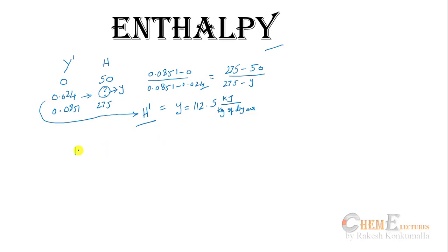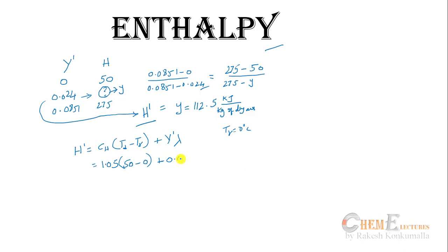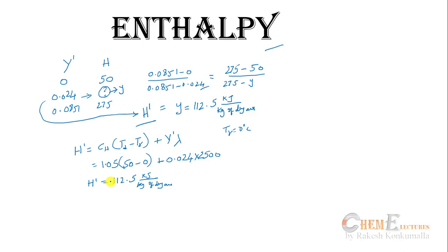Analytically, enthalpy H = C_s × (T_d − T_ref) + Y' × λ, where λ = 2500 kJ/kg for water. With C_s = 1.05, T_d = 50°C, T_ref = 0°C, Y' = 0.024: H = 1.05 × 50 + 0.024 × 2500 = 112.5 kJ per kg of dry air. The analytical and graphical values match.